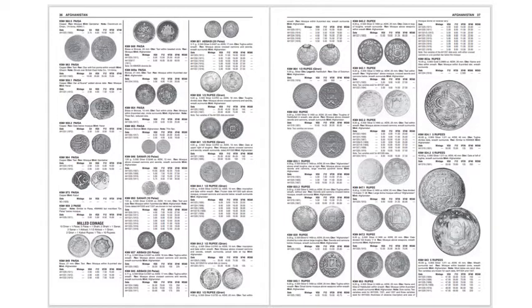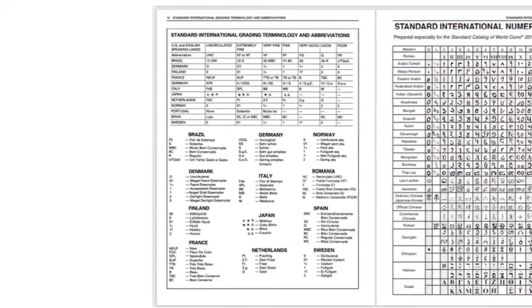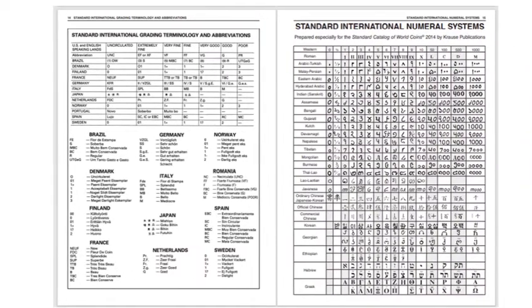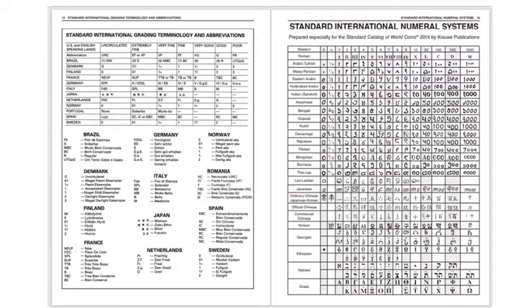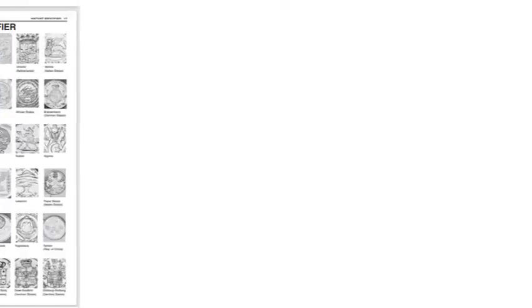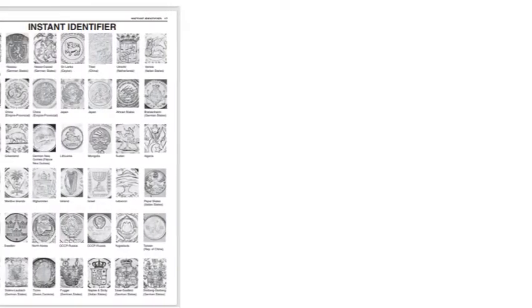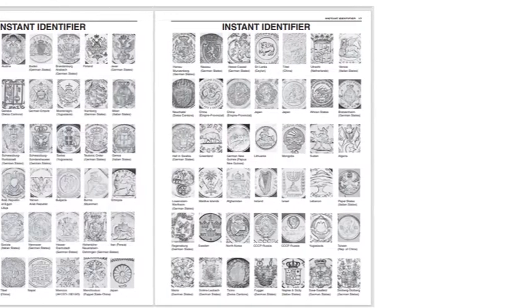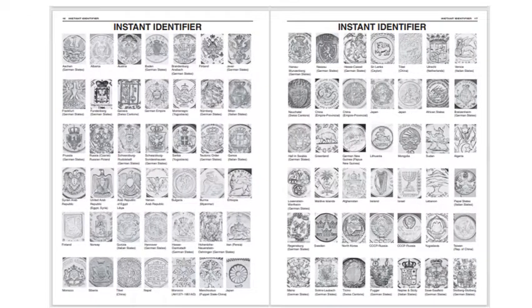About 60,000 actual-sized images of coins in black and white. The catalog also contains very relevant details like Standard International Grading Terminology and Abbreviations, Standard International Numeral Systems, Instant Identifier, Silver Bullion Value Chart, Gold Bullion Value Chart, A Guide to International Numerics, and much more.